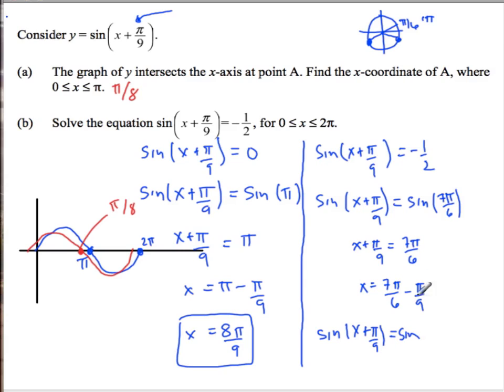And then sine of x plus pi over 9 equals sine of, and then this one, that's 5 pi over 6 plus pi. So 5 pi over 6 plus pi, 6 pi over 6 is 11 pi over 6. And then we do the same thing, x plus pi over 9 equals 11 pi over 6. And then subtract pi over 9. Same technique.